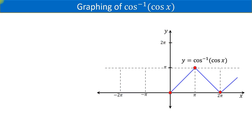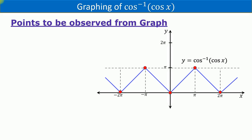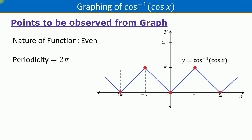By observing the pattern of the graph for values of x running from 0 to 3 pi, we can draw the graph for all remaining values of x. The following points follow from the graph: first, cos inverse of cos x is an even function; second, its period is 2 pi; third, its domain is the set of all real numbers and its range is the closed interval 0 to pi; and lastly, the function is continuous over its entire domain but not differentiable at x equals n pi, which are reflected in red color on the graph.